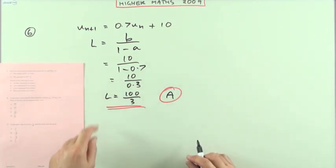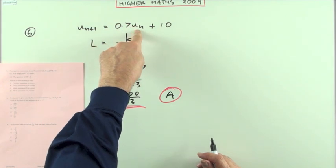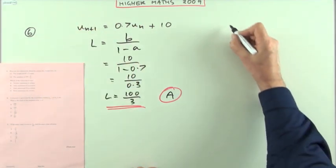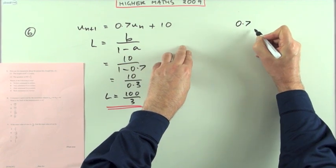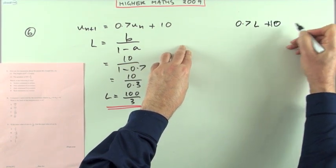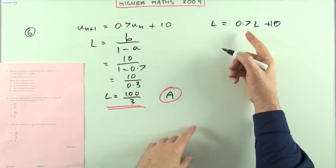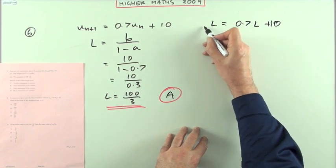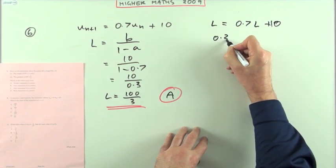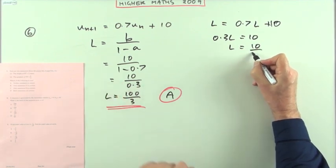If you didn't remember the formula, all the limit means is if you put that number in, you get the same number out. You're stuck at that number. You could write it this way: whatever the limit is, 0.7 times the limit plus 10 gives you that same number back. Take that across and subtract. There you've got 0.3—one take away 0.7. So 0.3L = 10, and then finally divide it, same as this.